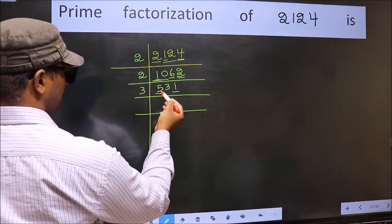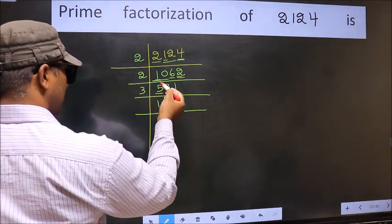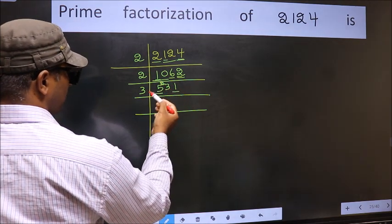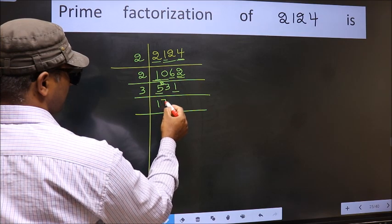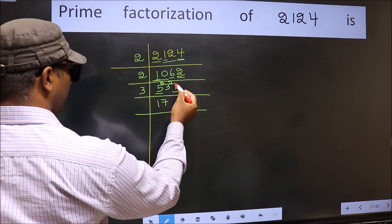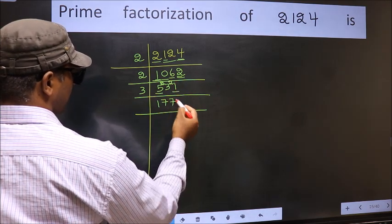First number 5. A number close to 5 in the 3 table is 3 times 1 is 3. 5 minus 3 is 2. 2 carried forward: 23. A number close to 23 in the 3 table is 3 times 7 is 21. 23 minus 21 is 2. 2 carried forward: 21. When do we get 21 in the 3 table? 3 times 7 is 21.